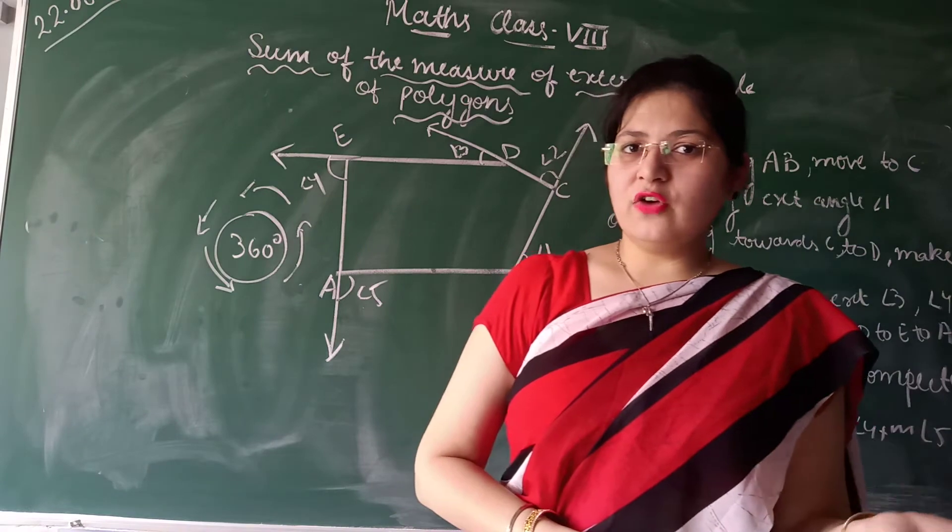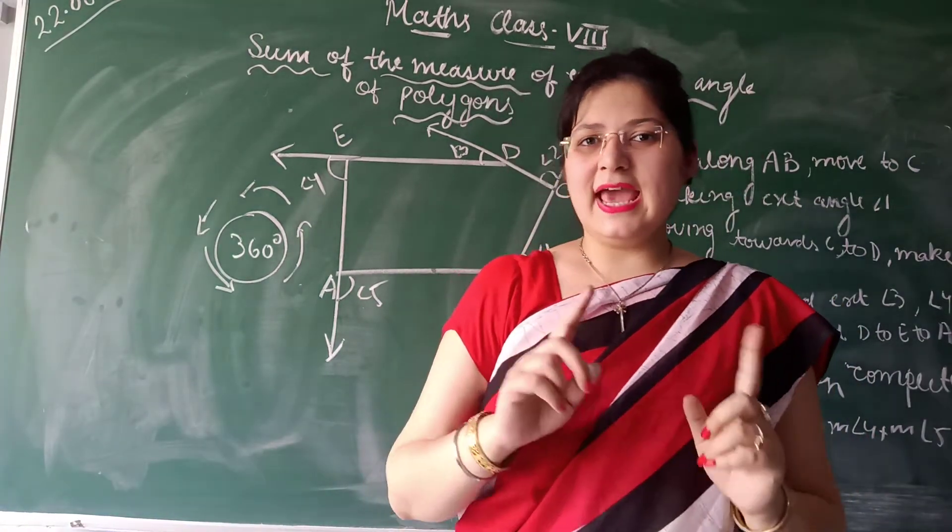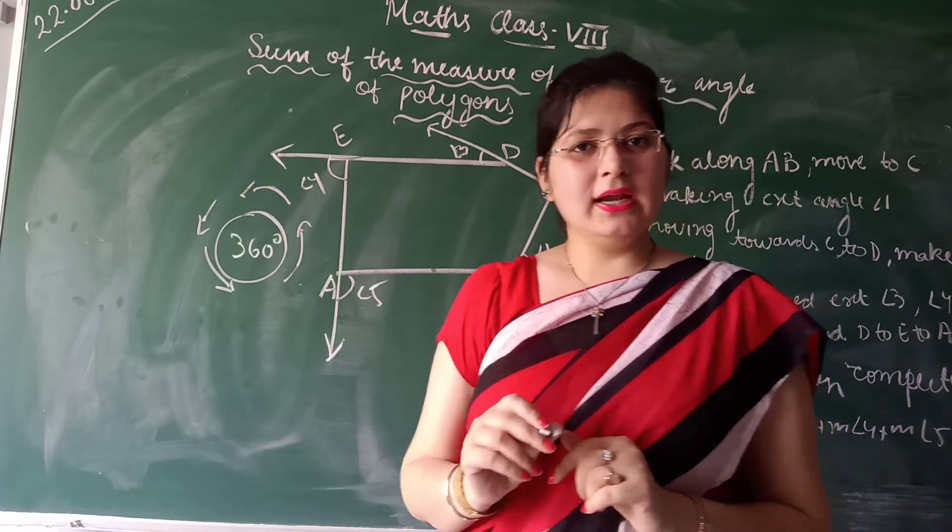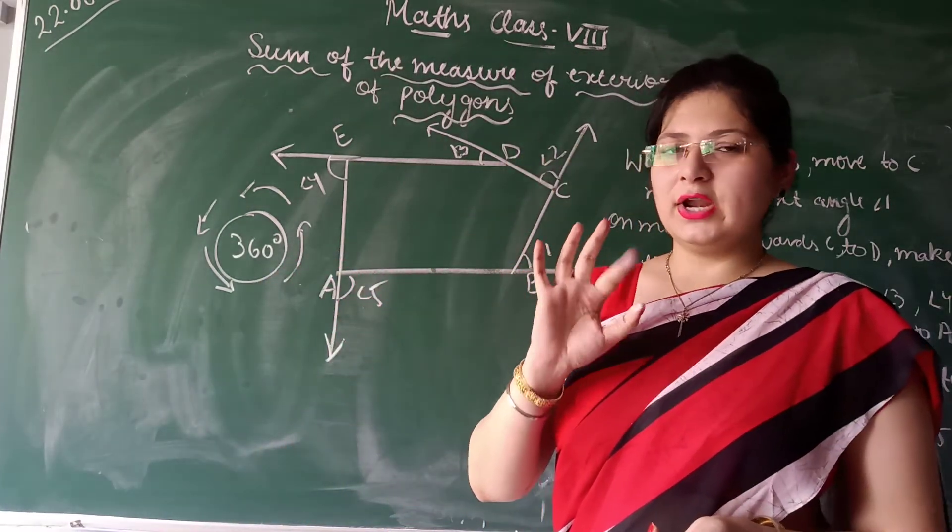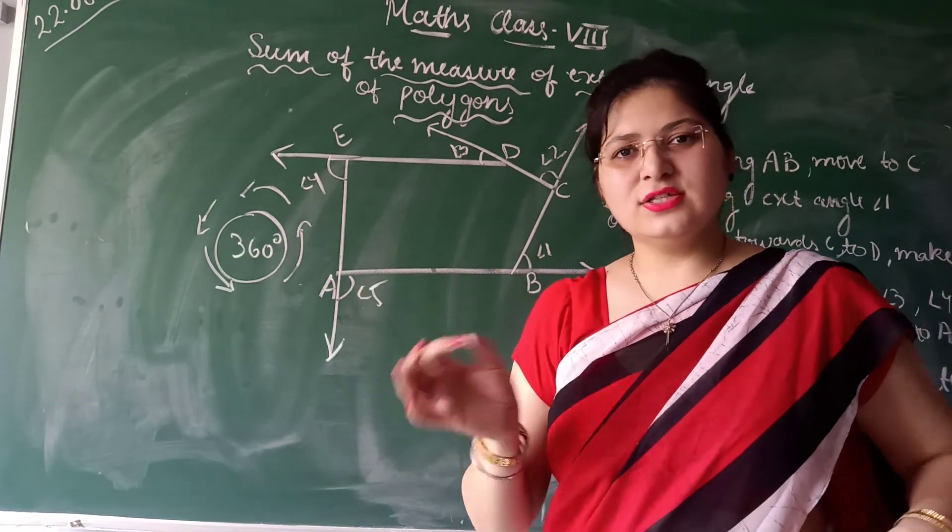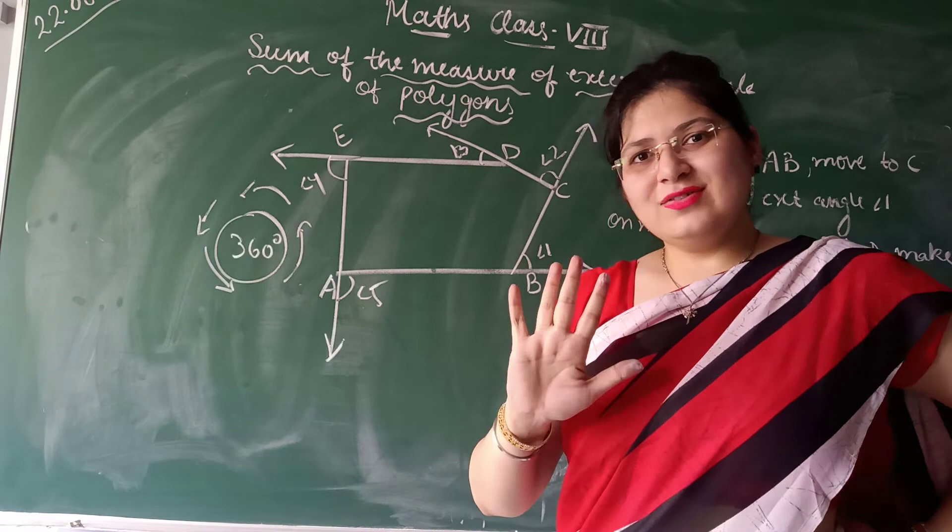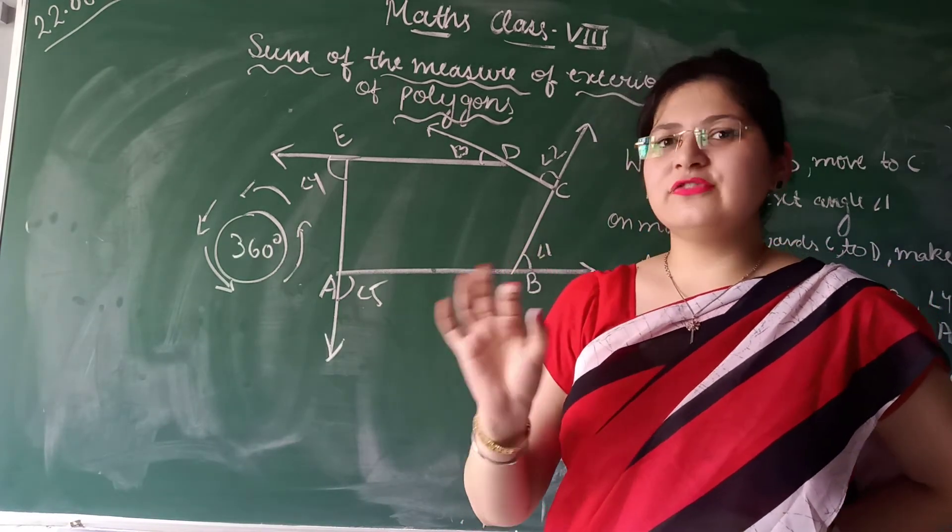And for the sum of the measure of interior angle, the formula is different. The general formula is N minus 2 into 180 where N is the number of sides. If 3 sides are there, 1 into 180 equals 180. If 4 sides, 4 minus 2 into 180 equals 360. If 5 sides, 5 minus 2 into 180 equals 540.